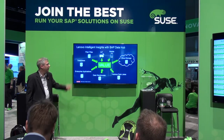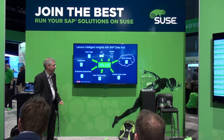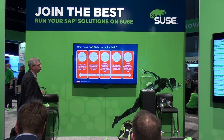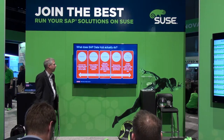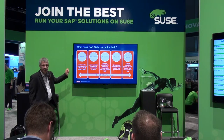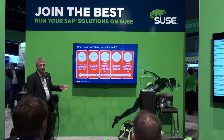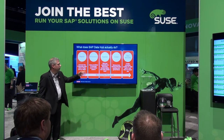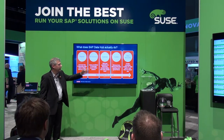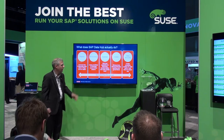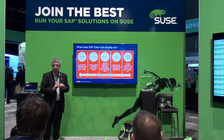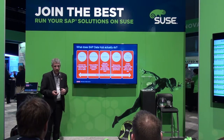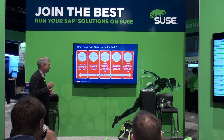And that's what we call the Lenovo Intelligence Insights with SAP Data Hub. What you actually can do with SAP Data Hub is to create pipelines to connect your data, to orchestrate and create workflows that work with your data. You can ingest, you can control, you can discover your data — basically manage all your data end to end, leave it where it is and just work with it. That's in essence SAP Data Hub.